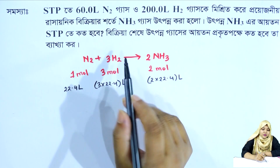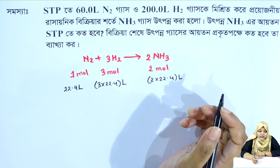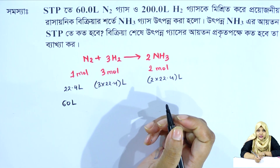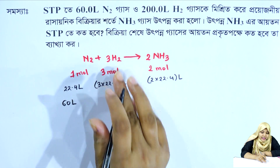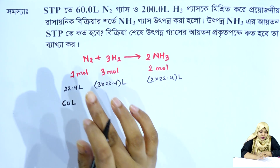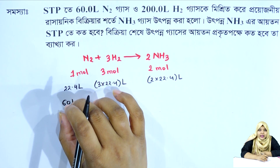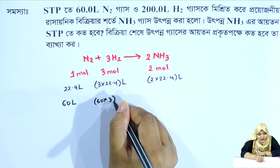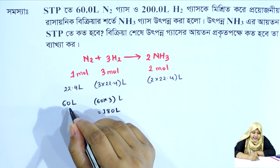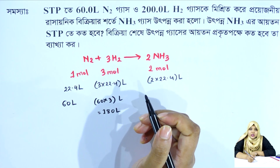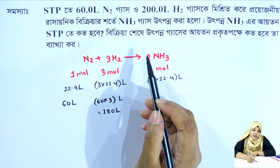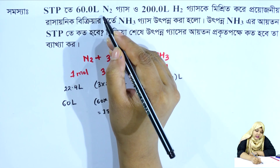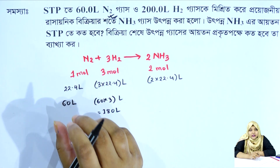We are going to use 60 liters of nitrogen. To react with 60 L of nitrogen, hydrogen required = 60 × 3 = 180 L. We have 200 L of hydrogen, but only 180 L is needed, so hydrogen is in excess. The available hydrogen is approximately 200 L, meaning nitrogen is the limiting reagent.